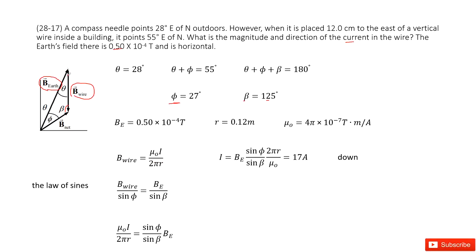We can solve using the law of sines. For the angle phi pointing to this one, B wire divided by sin φ equals BE divided by sin β, where beta points to BE.